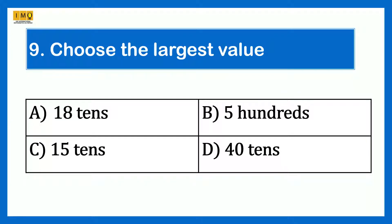Choose the largest value. Option A 18 tens, Option B 500 ones, Option C 15 tens, Option D 40 tens. Option A 18 tens is 180, Option B 500 ones is 500, Option C 15 tens is 150, Option D 40 tens is 400. So the answer is Option B: 500 is larger than the other numbers.